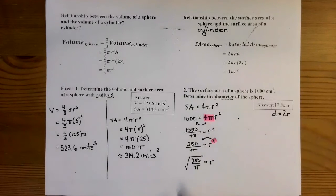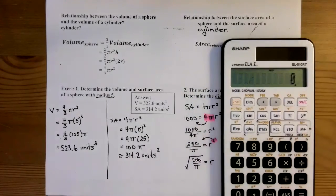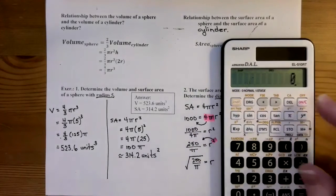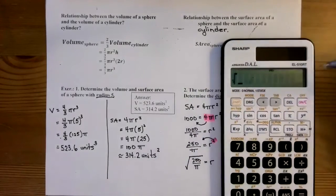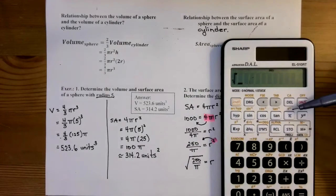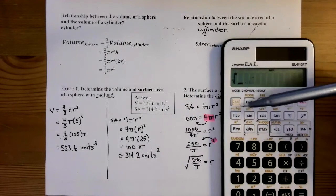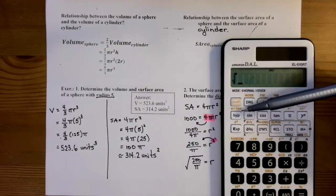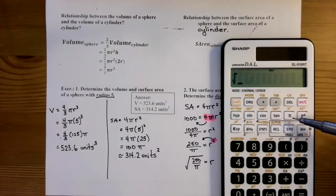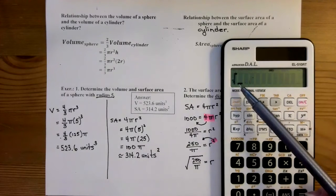Now this right here would be an exact value, but we want the approximate value, so we're going to use our calculators. And we're going to do our square root function. So if you remember, mine is the yellow above the π. So to get that yellow, I have to press the yellow button, the second F button. When I press that and then press the π button, you'll see that the square root sign shows up.